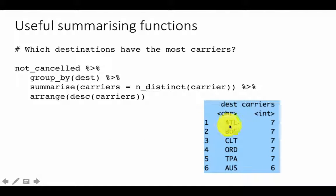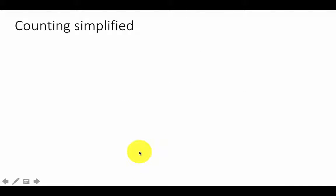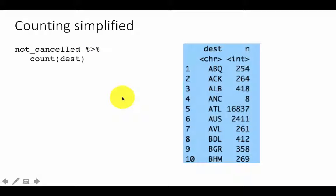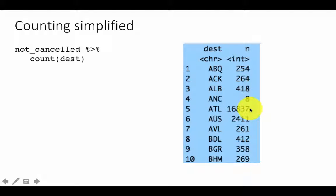Atlanta appears to have the most carriers, followed by Boston and others. Counting is such a common operation that there is a shortcut: you can simply write not_cancelled %>% count(destination). That directly gives you for every destination how many rows were found. The result isn't sorted, but you can see Atlanta is one of the big numbers. If you arrange by descending count, you'd see which destination is the maximum.